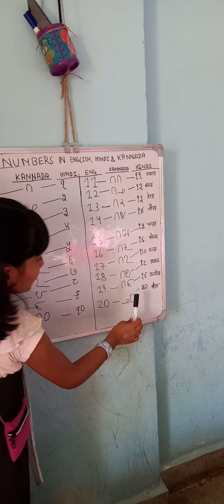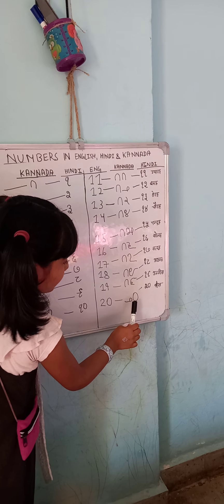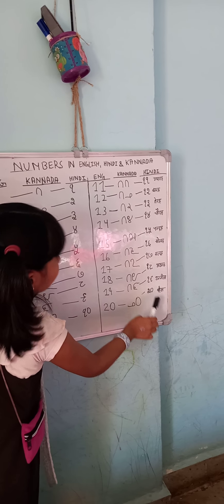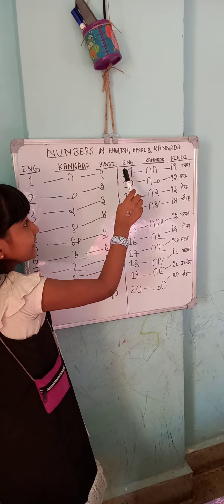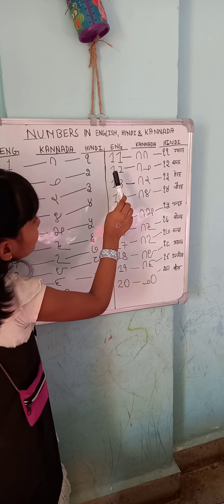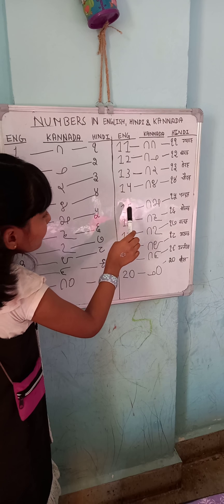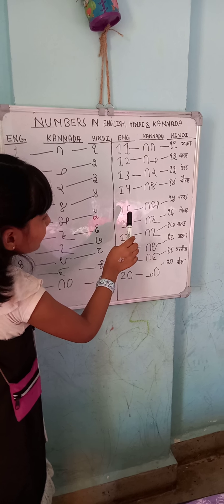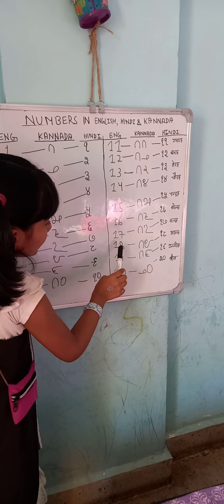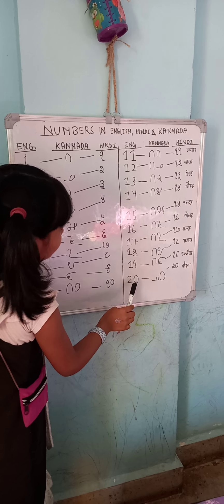20. In English: 11, 12, 13, 14, 15, 16, 17, 18, 19, 20.